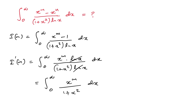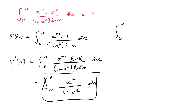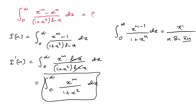This integral is familiar to us because in a previous video I solved: the integral from 0 to infinity of x to the m minus 1 over (1 plus x to the n), dx is equal to pi over n times sine of pi·m over n. I will add the link in the description.